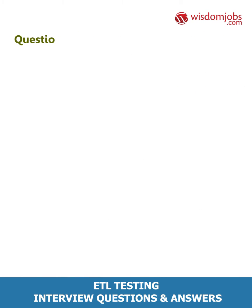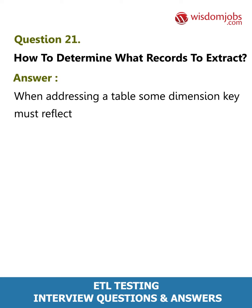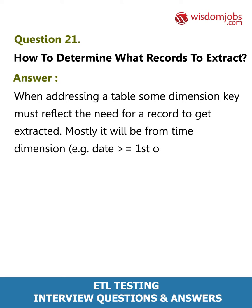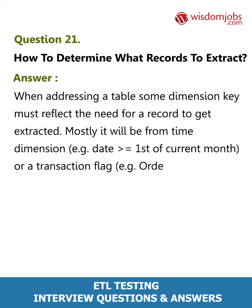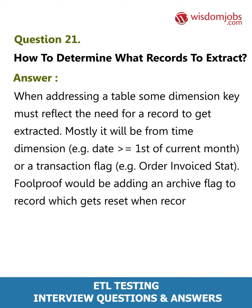Question 21: How to determine what records to extract? Answer: When addressing a table, some dimension key must reflect the need for a record to get extracted. Mostly it will be from a time dimension, e.g., date greater than or equal to the first of the current month, or a transaction flag such as order invoiced status. A foolproof approach would be adding an archive flag to a record which gets reset when the record changes.